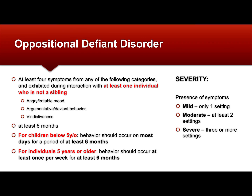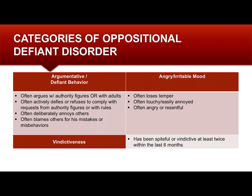There is also a severity rating depending on how many settings the person shows the defiant behavior. If it's only in one setting — say only in school or only at home — the severity is mild. If it's in two settings, it's moderate. If it's in three or more settings, it's severe.